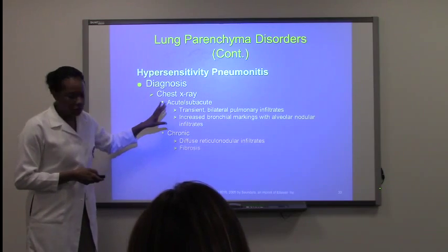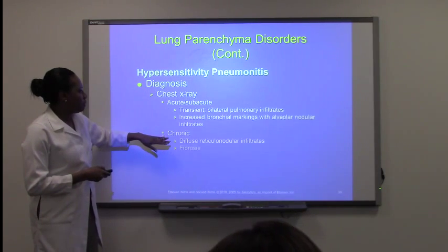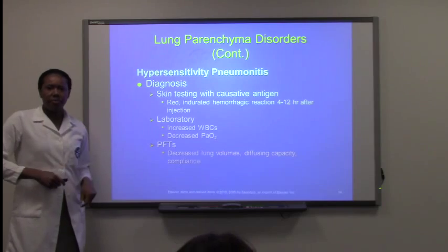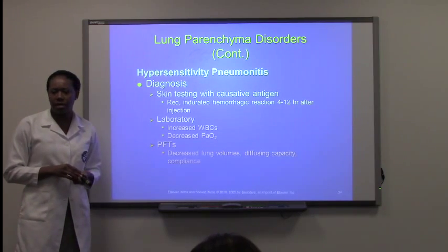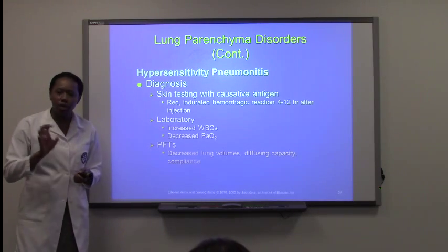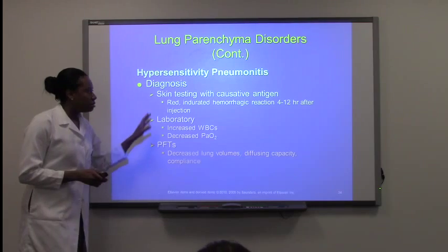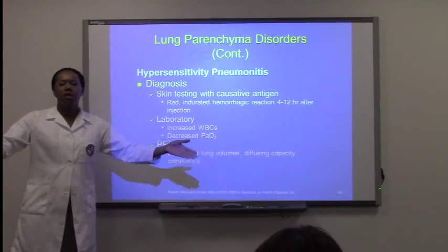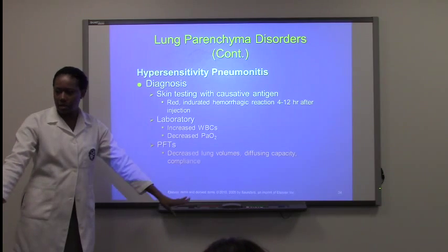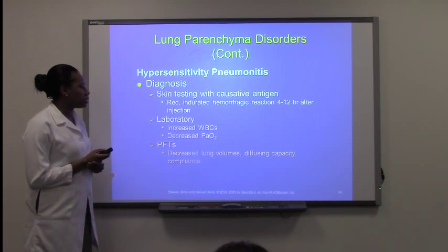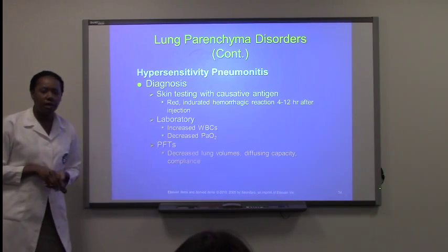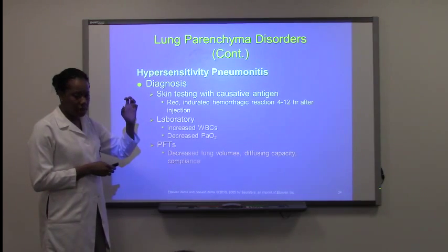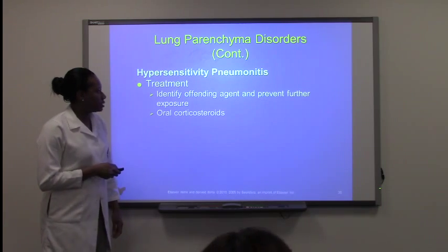Chronic cases show more fibrosis in the upper lobes, visible on chest x-ray. For diagnosis, skin testing is important — these patients are allergic to molded sugarcane, molded hay, animals, and so forth, so they have a known allergy. They need to see an allergist for skin testing. Laboratory findings include increased white blood cells due to the inflammatory situation and decreased oxygen due to alveolar fibrosis. Pulmonary functional testing will be decreased. Treatment is to stop exposure — leave the farm, or whatever the allergen source is.